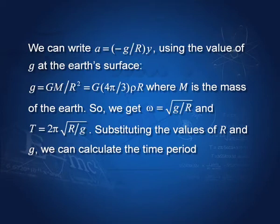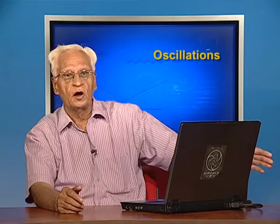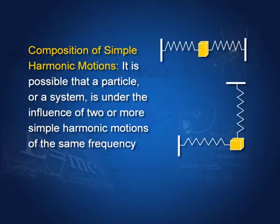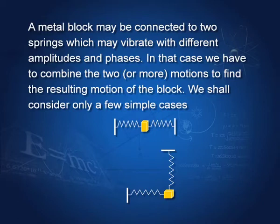So the time period is T = 2π√(R/g), where R is the radius of the Earth and g is the acceleration due to gravity at the surface, and substituting values gives the numerical time period. It is also possible that a particle or system is under the influence of two or more simple harmonic motions simultaneously — for example, from multiple springs acting on it — and we want to find the resultant motion.